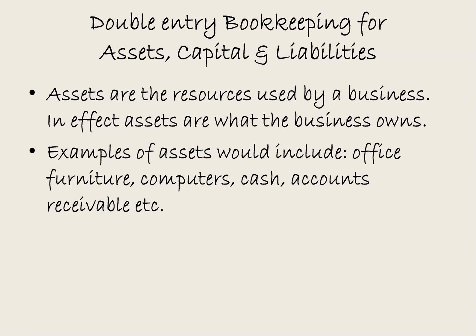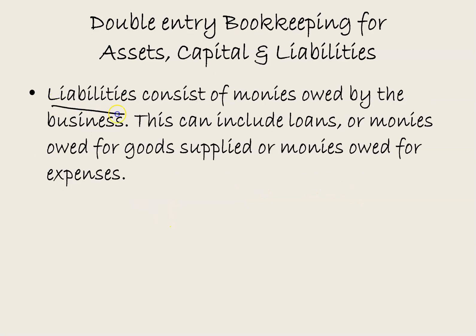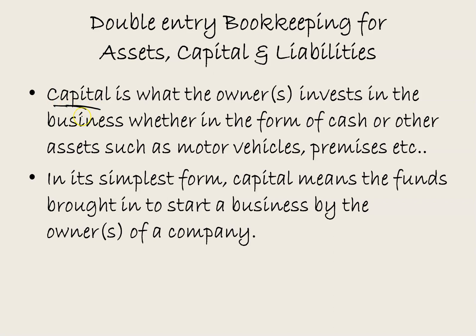Assets are the resources used by a business — in effect, assets are what the business owns. Examples of assets include office furniture, computers, cash and accounts receivable. Liabilities consist of monies owed by the business, which can include loans, monies owed for goods supplied, or monies owed for expenses. Capital is what the owner or owners invest in a business, whether in the form of cash or other assets such as motor vehicles or premises. In its simplest form, capital means the funds brought in to start a business by the owner or owners.